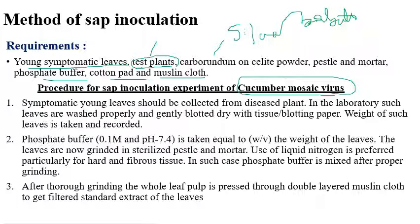The procedure of sap inoculation is demonstrated on cucumber mosaic virus, though tobacco mosaic virus can also be used since both are sap transmission viruses. The first step is to collect symptomatic leaves from diseased or infected plants in the laboratory. These infected leaves are washed properly and gently blotted dry using blotter paper. The weight of the leaves is also recorded.